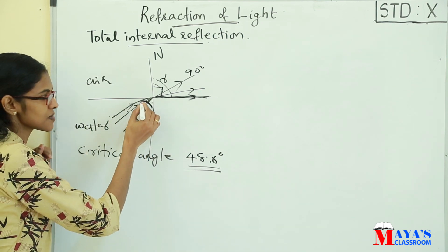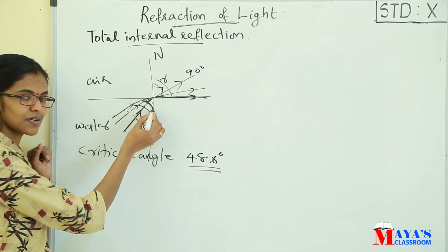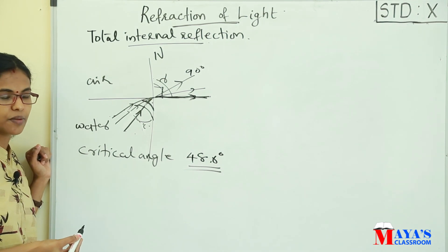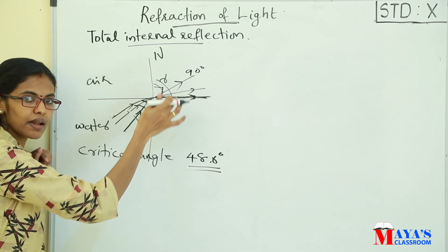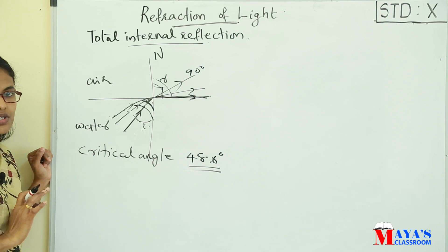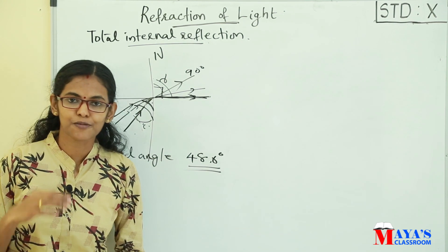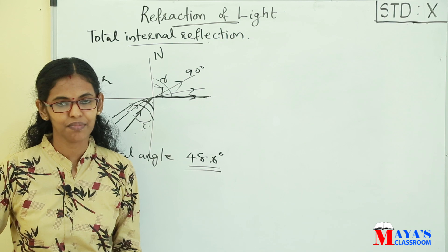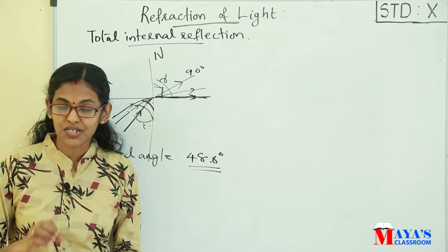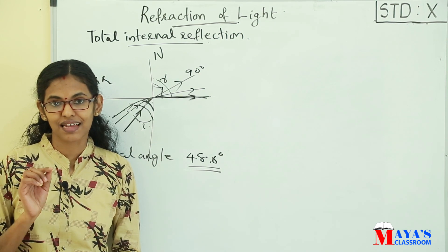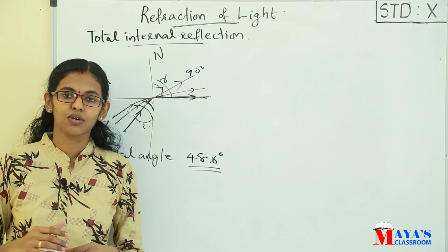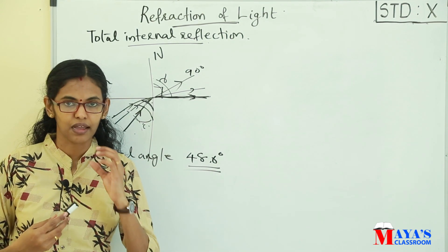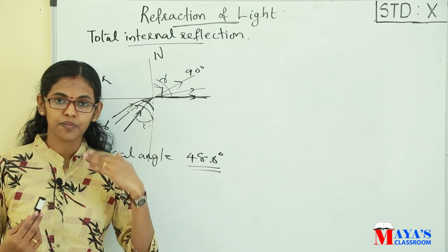When the angle of incidence is such that the angle of refraction is 90 degrees, the refracted ray is parallel to the surface of separation. That particular angle of incidence is known as the critical angle.